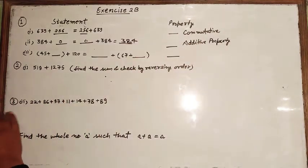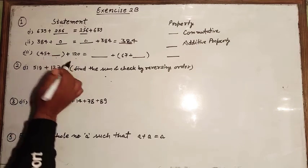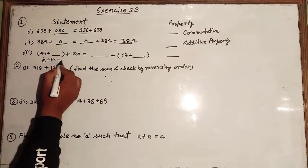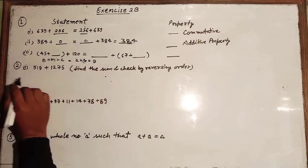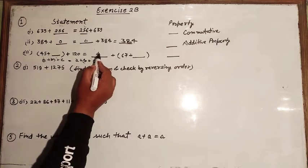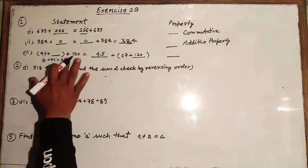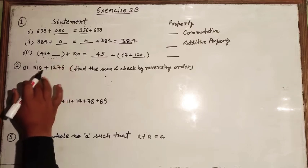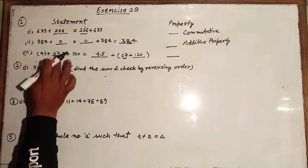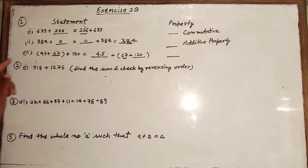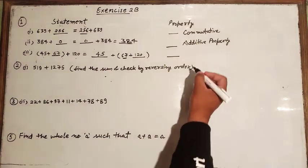The third one uses a, b, and c. We have (a plus b) plus c equals a plus (b plus c). The value of a is 45, b is 67, and c is 120. So we write: 45 plus 67 plus 120 equals 45 plus 67 plus 120. This property is the associative property.